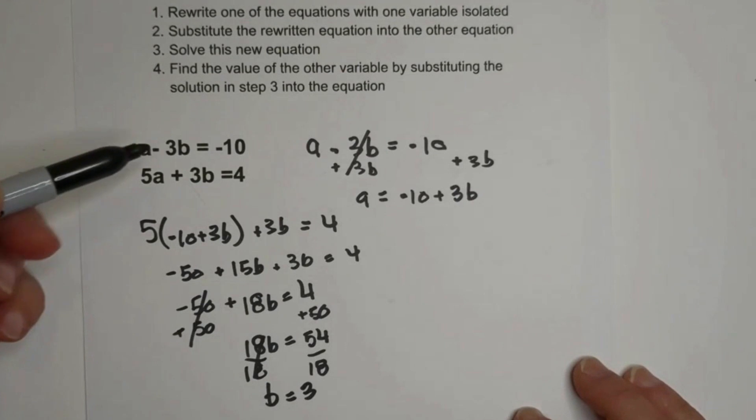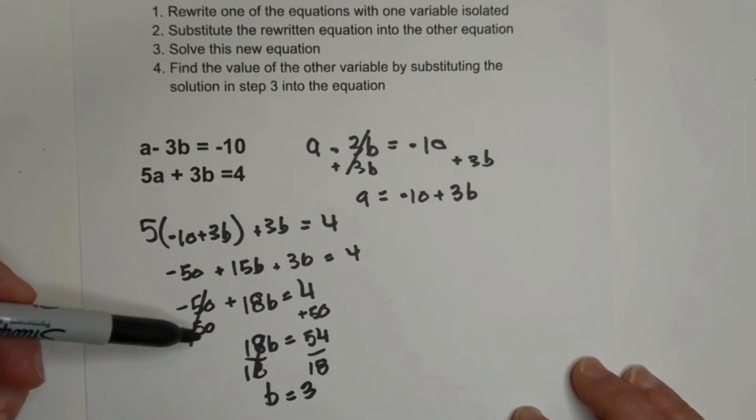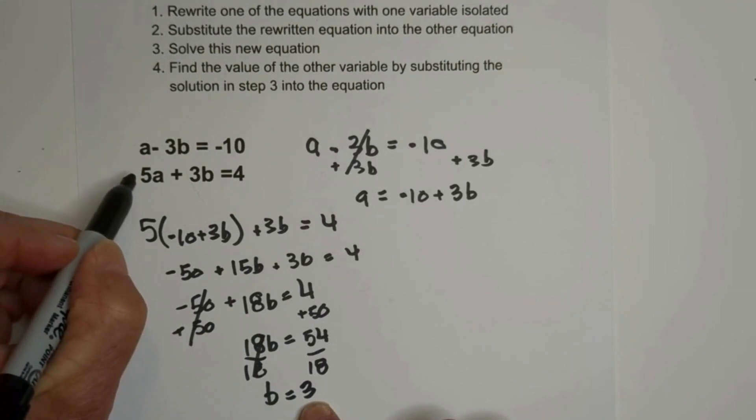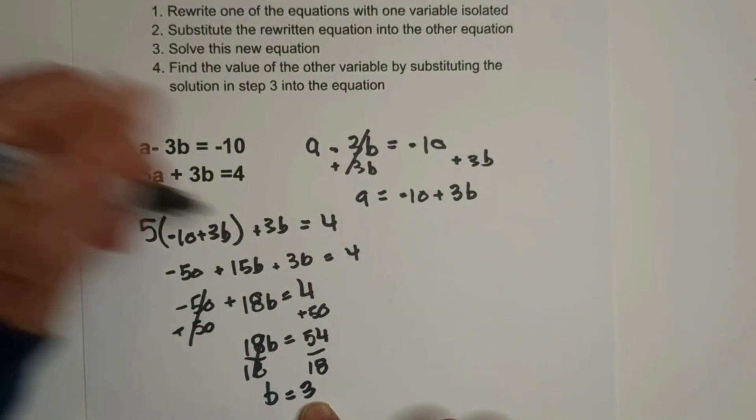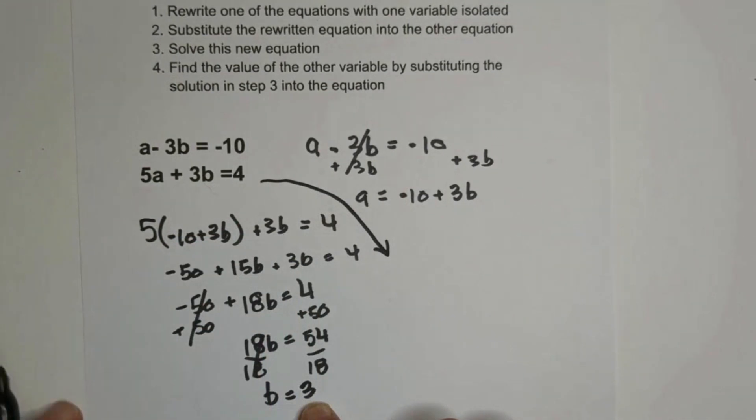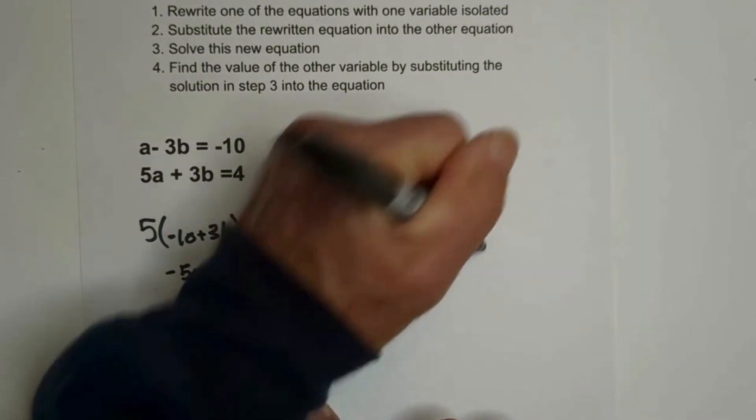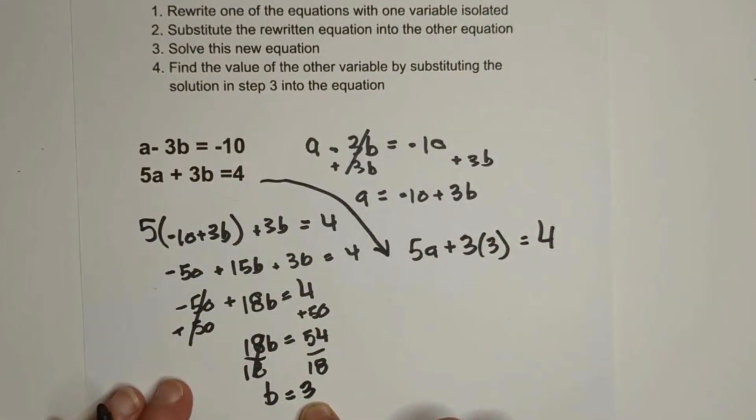So now I have completed step one, step two, and three. I have B as a solution. So now I substitute this B into the equation. This will be step four. I have 5A plus 3 times B, which is 3, equals 4.